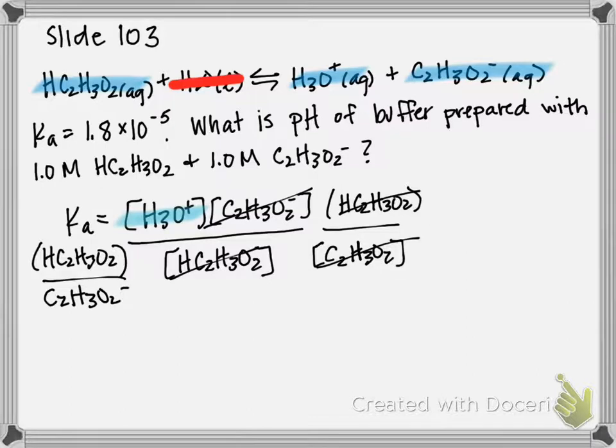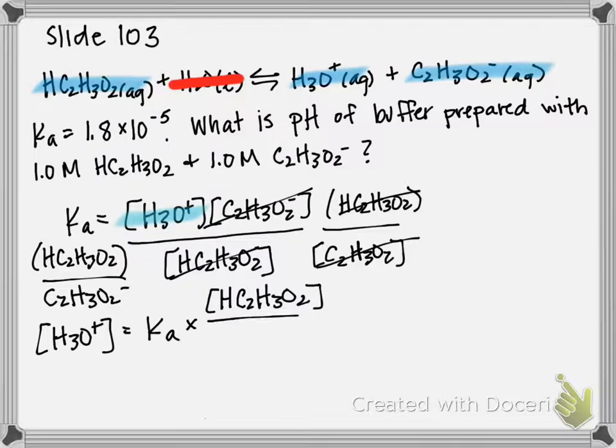And I'm going to divide both sides by C2H3O2, which gives me a new expression: H3O plus is equal to Ka times HC2H3O2 over C2H3O2 minus.